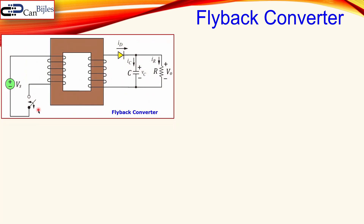Before we jump to our design example, let's briefly discuss the flyback converter — this is already done in the previous video in great detail. Looking at this diagram, we have the input voltage Vs which is our DC voltage, the switch, the transformer, the diode, the capacitor, and the resistor load. The diode here creates current flow in the secondary winding, and the capacitor picks up the ripple voltage. The load is modeled by a simple resistor R.